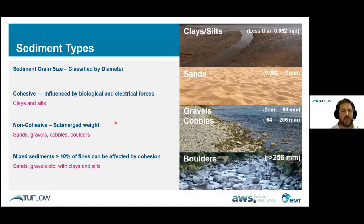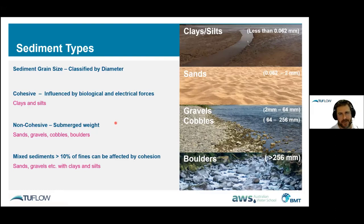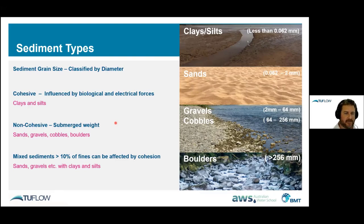Sediment can be broadly defined by diameter: clays and silts, sands, gravels and cobbles, and boulders. For very small particles like clays and silts, biological and electrical forces can hold them together — this is called cohesive behaviour, so muds tend to be cohesive. As particles get larger, gravitational forces become more important, and sands up to boulders tend to be non-cohesive. We can also have mixed sediments — a sand with enough clay and silt can start to act cohesively. We need to be aware of these different sediment types and processes.